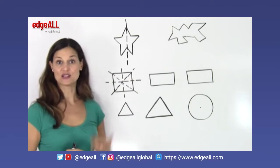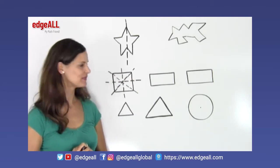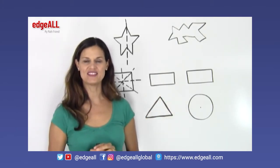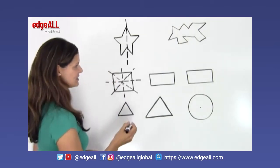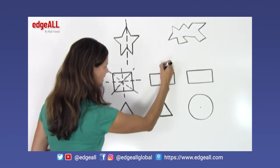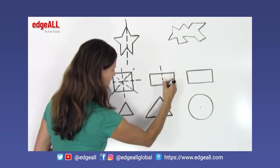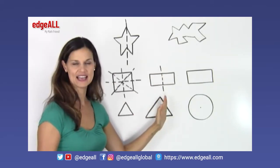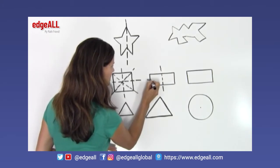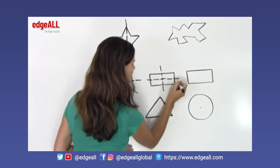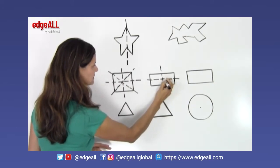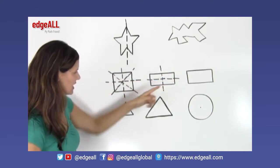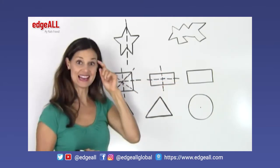So our square has four lines of symmetry. Now let's look at a rectangle and see how many lines of symmetry we can find. The rectangle has a vertical line of symmetry right through the middle, and I can see the reflection is the same on each side. The rectangle also has a horizontal line of symmetry, with the shape above it being a reflection of the shape below.